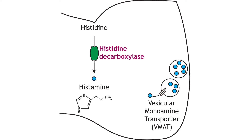Finally, histamine is another biogenic amine transmitter that is synthesized from histidine through the action of histidine decarboxylase, the rate-limiting step of the pathway. Like other monoamine neurotransmitters, it is packaged into synaptic vesicles via the vesicular monoamine transporter.